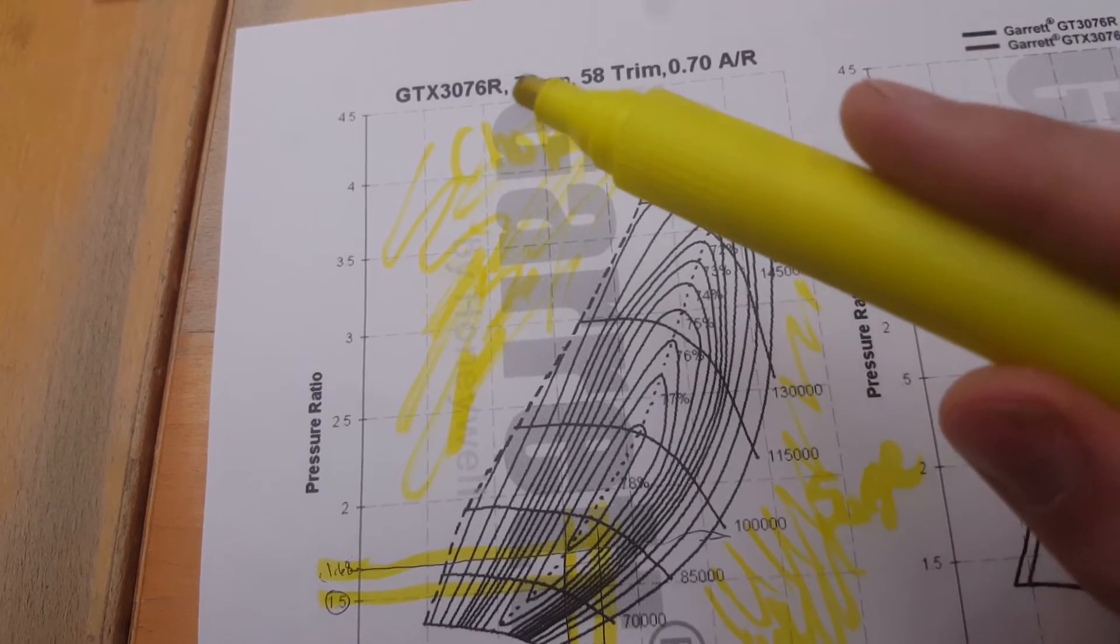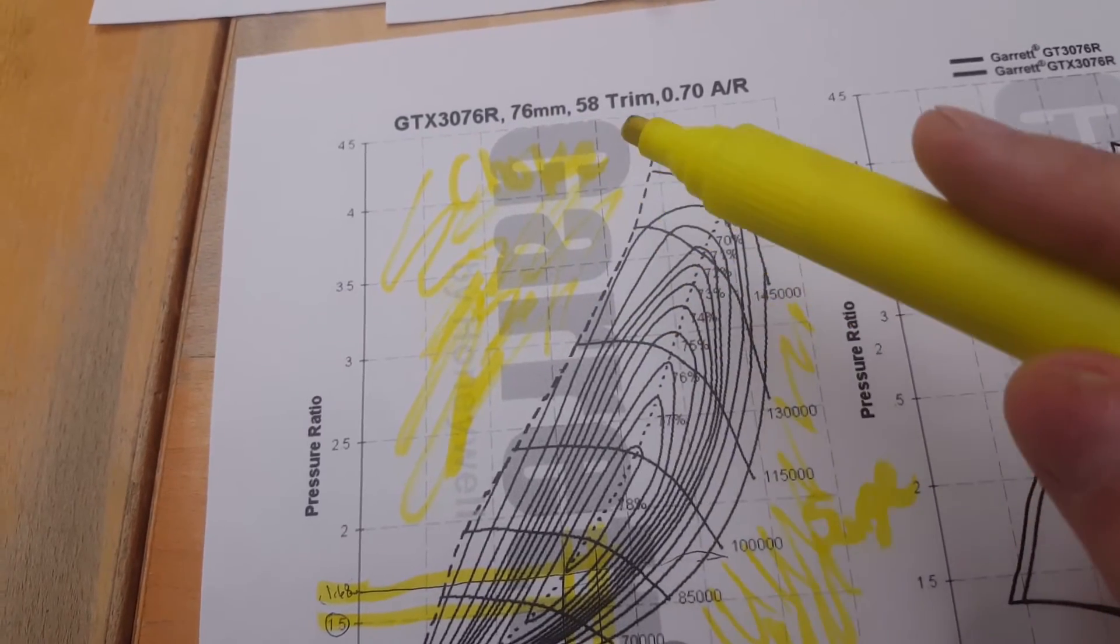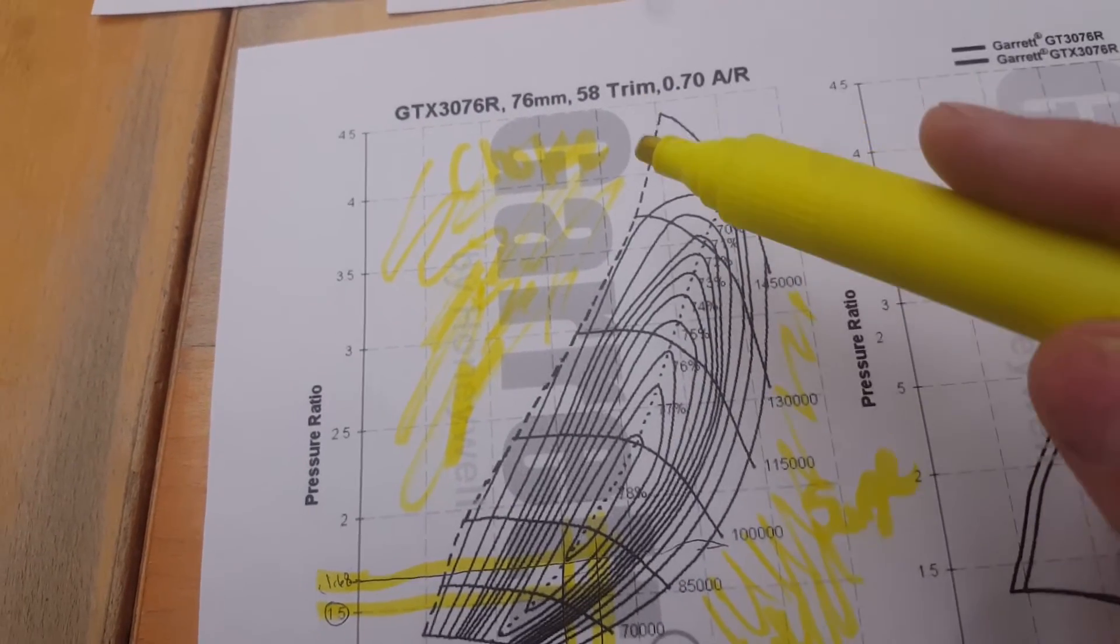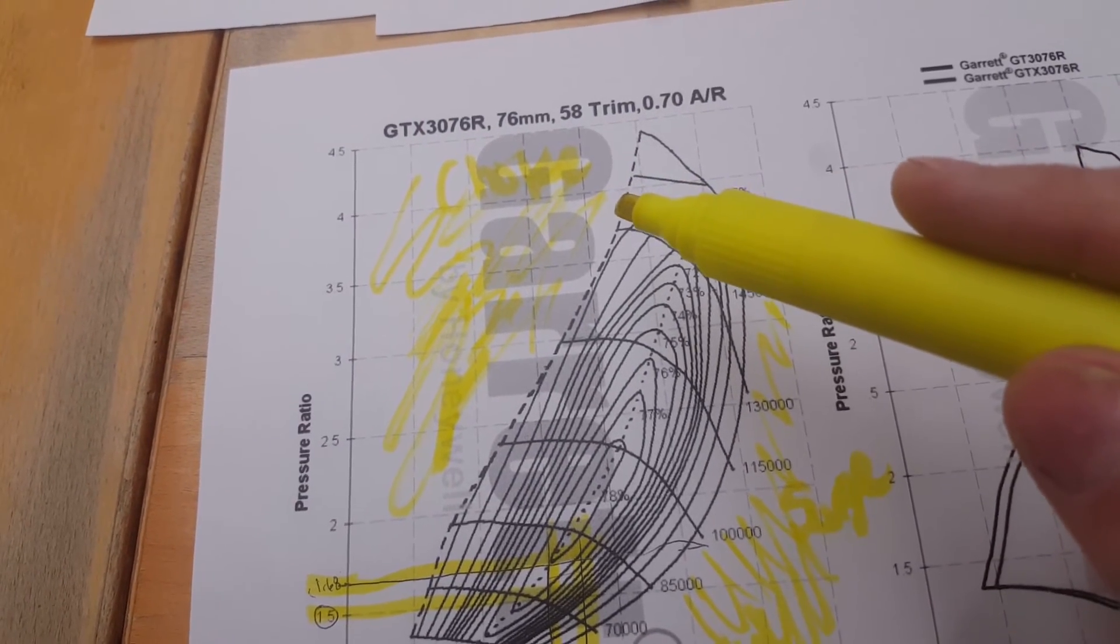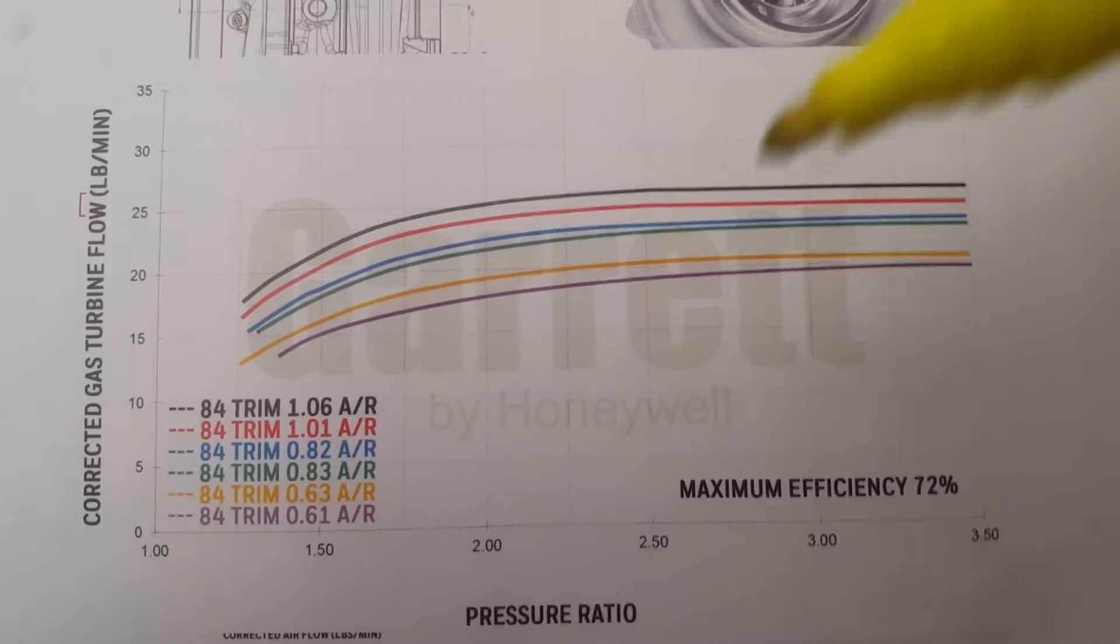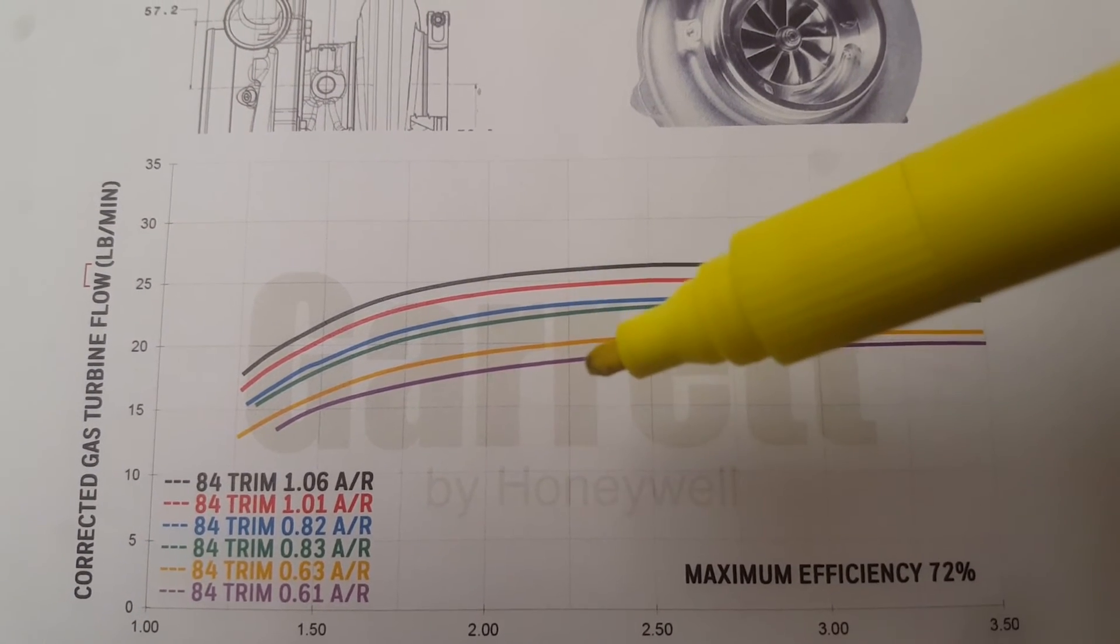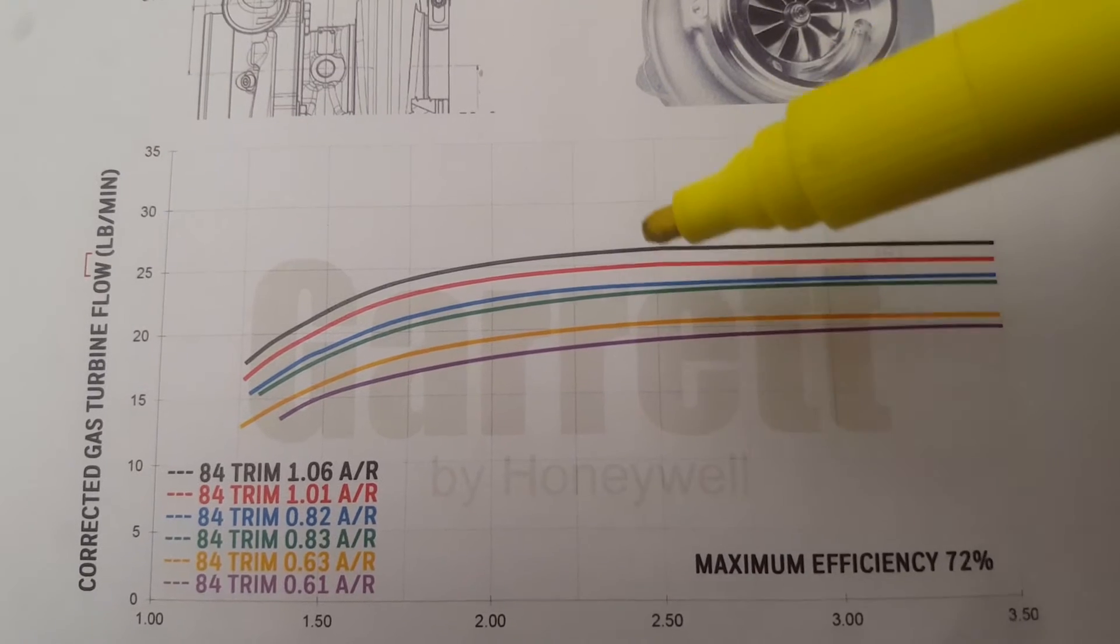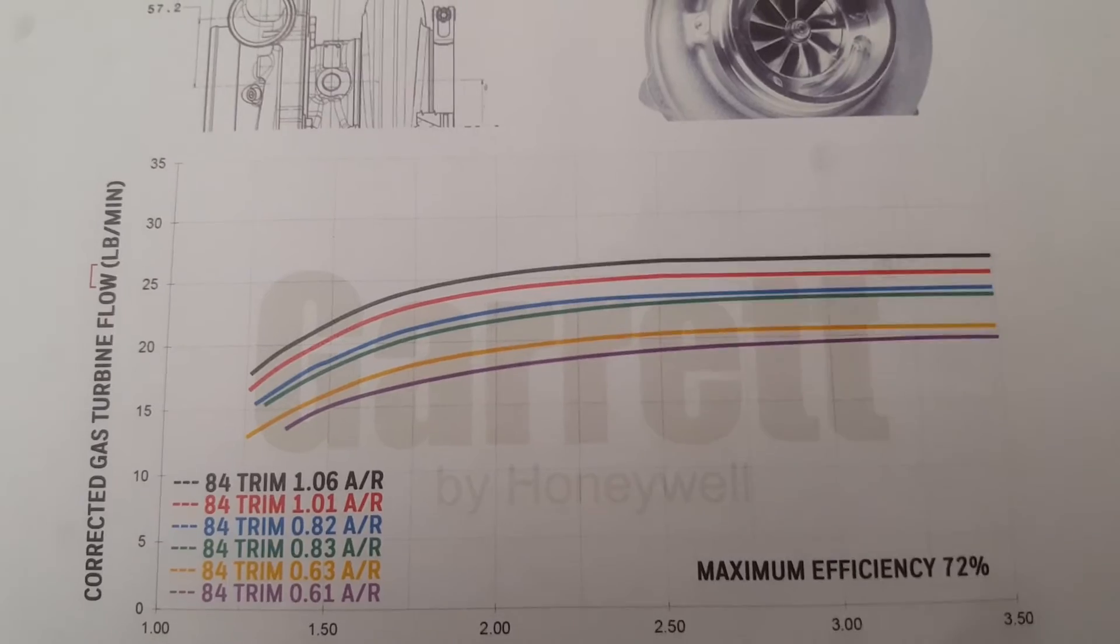So you want to shoot for that maximum efficiency range. You want to check what turbo you want to go with. What your power goals are, high range, mid range, low range. Look into doing research on trims and AR ratios. AR is just the area divided by the radius of the turbocharger housing and the compressor wheel to get the rating. Higher is more, obviously, more flow. As you can see in this graph here. So yeah, see the 61 is like barely above 17 max pressure ratio. And this 1.06 is like above 25, so like 27. So, obviously, you see that right there. And that's the GTX 3076.